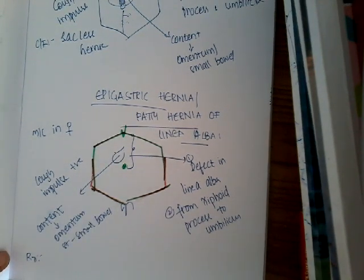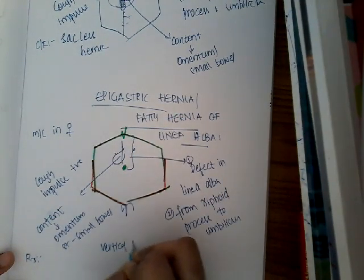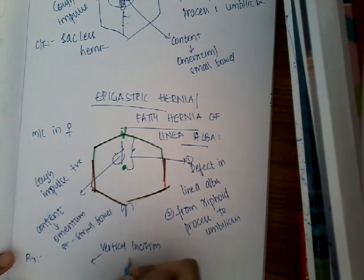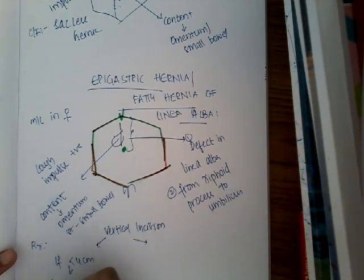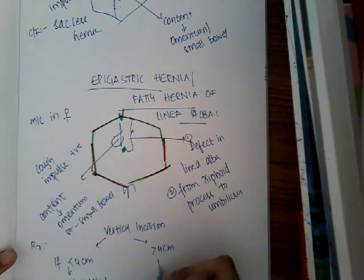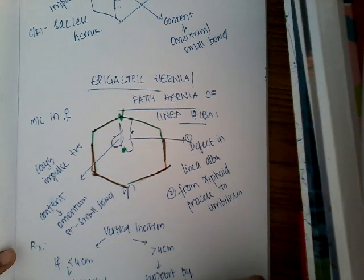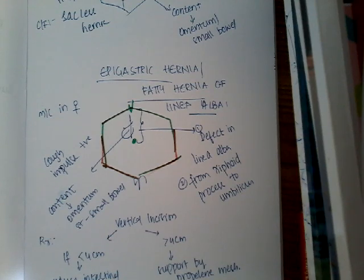For treatment, you will first give a vertical incision. The treatment option then depends upon the size of the hernia sac. If the hernia sac is more than four centimeters, you will reduce the intestinal content and give support using a polypropylene mesh. This is how you treat epigastric hernia. Thank you for watching.